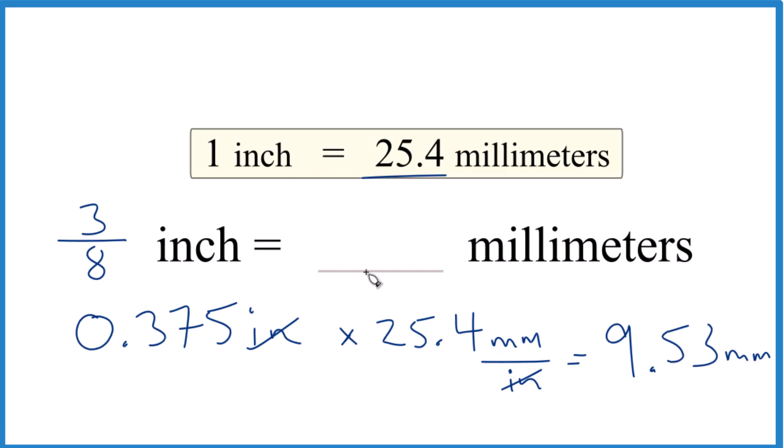So in answer to our question, when we convert 3 eighths of an inch to millimeters, we have 9.53 millimeters.